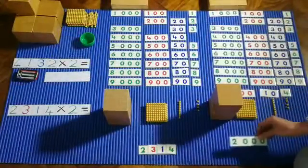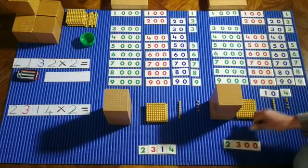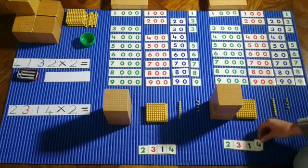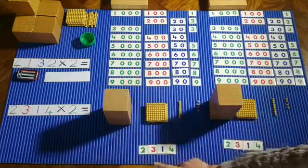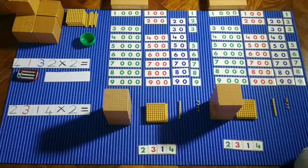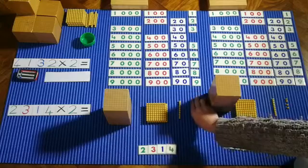So let's see this number. Two thousand, three hundred and fourteen. I've taken our number once. I've taken our number twice. Now let's see if we put them together what our product is.